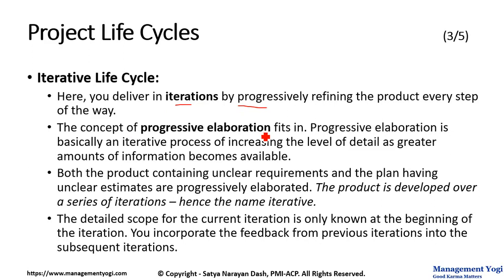Progressive Elaboration is basically an iterative process of increasing the level of detail as a greater amount of information becomes available. Both the product containing unclear requirements and the plan having unclear estimates are progressively elaborated. In Iterative Life Cycle, we don't know the requirements in full detail — in other words, unclear requirements — so we progressively elaborate on those requirements. Not only that, the plan having unclear estimates is also progressively elaborated, and the product is developed over a series of iterations. Hence the name Iterative.